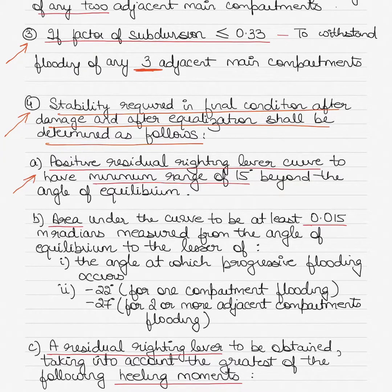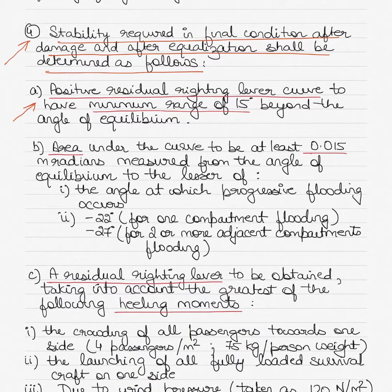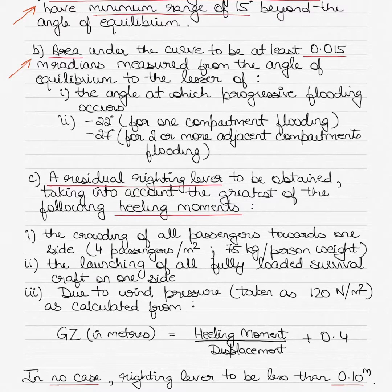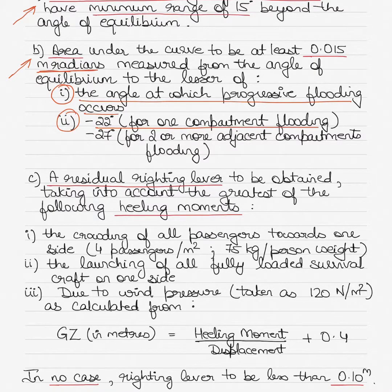The stability required in final condition after damage and after equalization shall be determined as follows: the positive residual righting lever curve should have a minimum range of 15 degrees beyond the angle of equilibrium. The area under the curve should be at least 0.05 meter-radians measured from the angle of equilibrium to the lesser of either the angle at which progressive flooding occurs, or 22 degrees for one compartment flooding and 27 degrees for two or more adjacent compartments flooding.